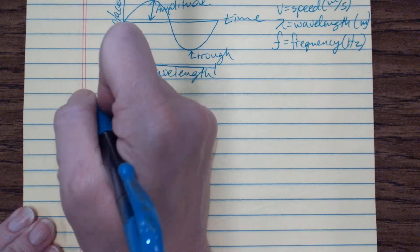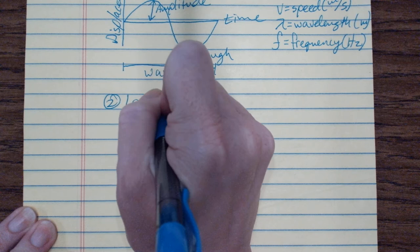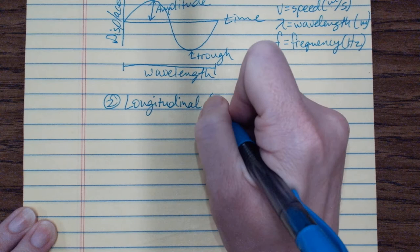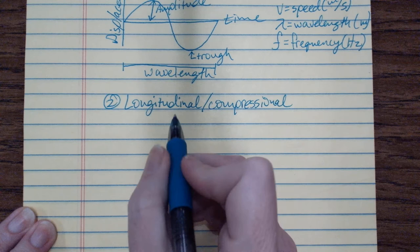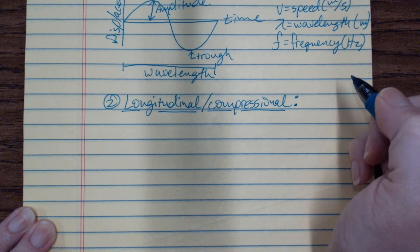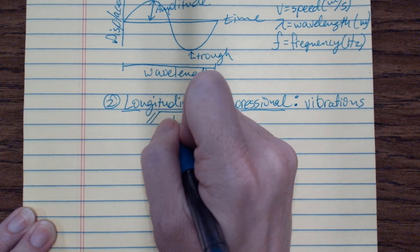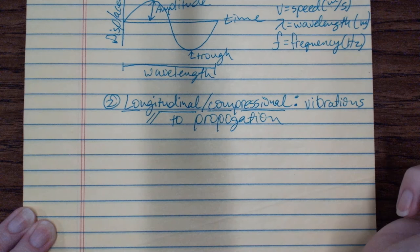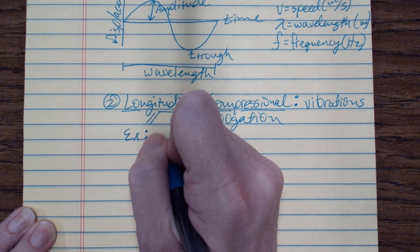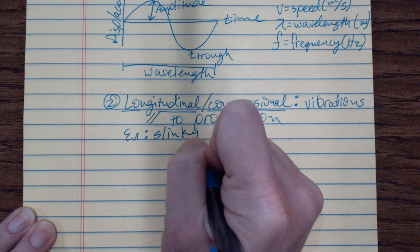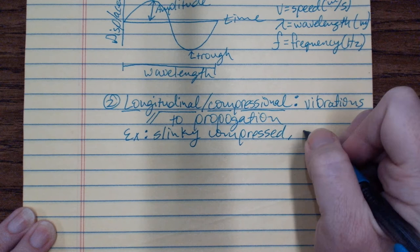The other type of wave is called a longitudinal or compression wave. These are when the vibrations are parallel — that's the symbol for parallel — to propagation. An example would be if you compress a slinky and then let it go. These are also what make up sound waves.